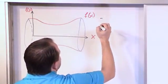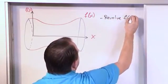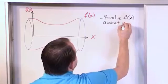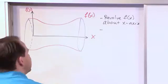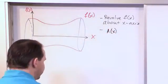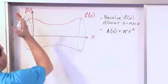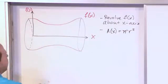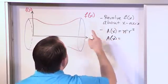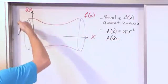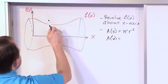For the washer method, we're going to revolve f of x about the x-axis. At any x, the cross-sectional area is just pi times r squared, because no matter where we cut it, we're going to see a circle. And we know what the radius is — at any point where we slice it, the radius is just f of x. Because if you think about it — and this is so critical — if I slice it right here, what is the radius of this circle?